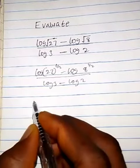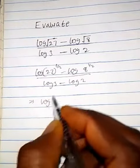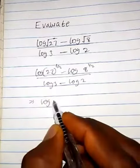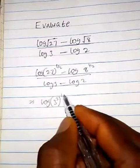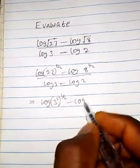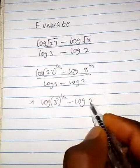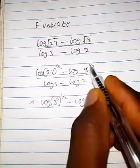So now this implies log rating of 27 can be written as 3 raised to the power 3, bracket close, times half. Minus log, it can be written as 2 raised to the power 3, times half.